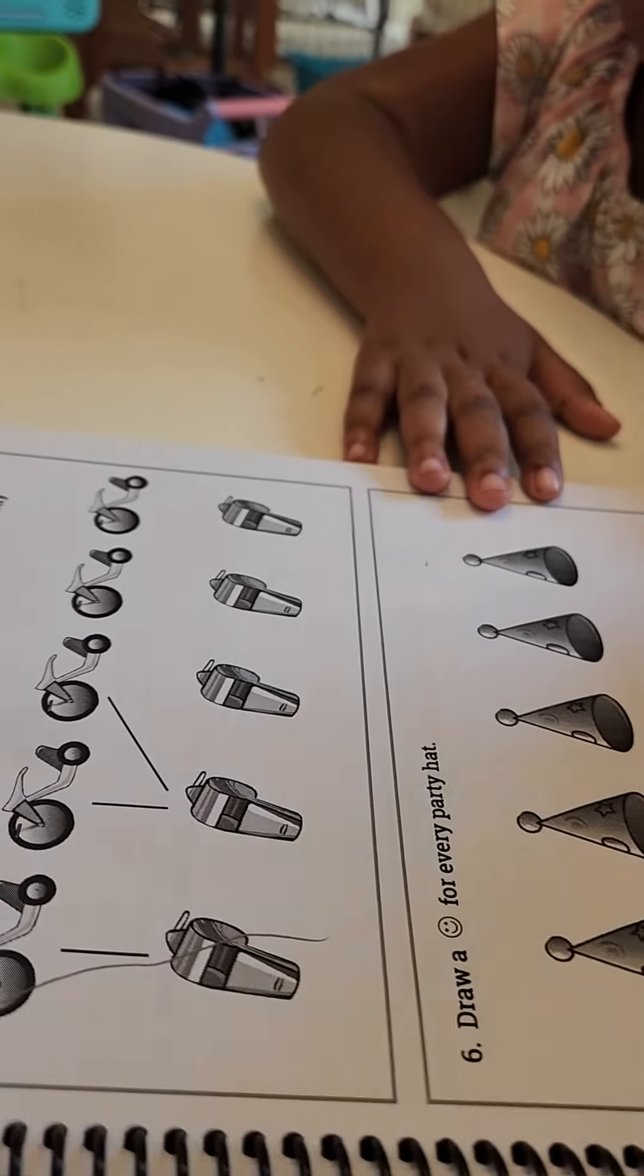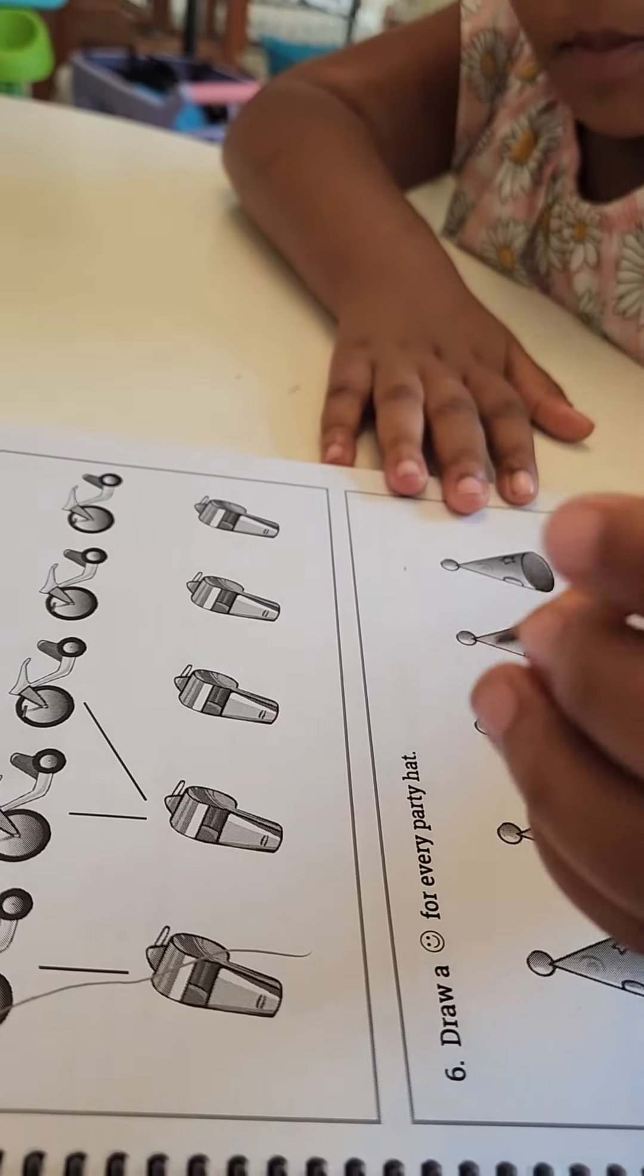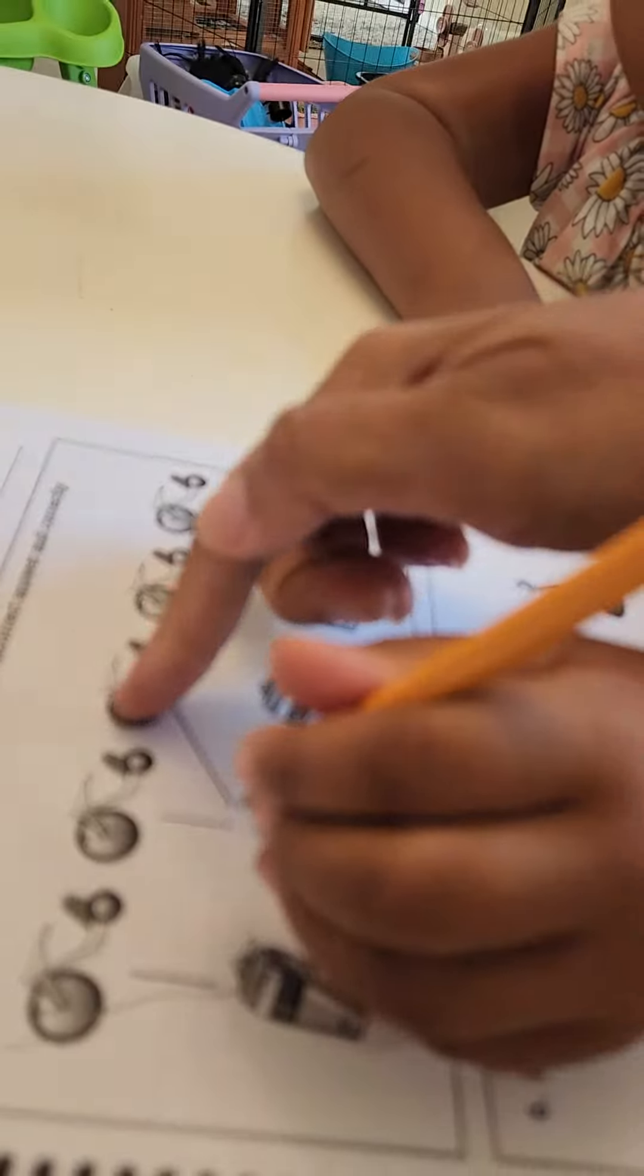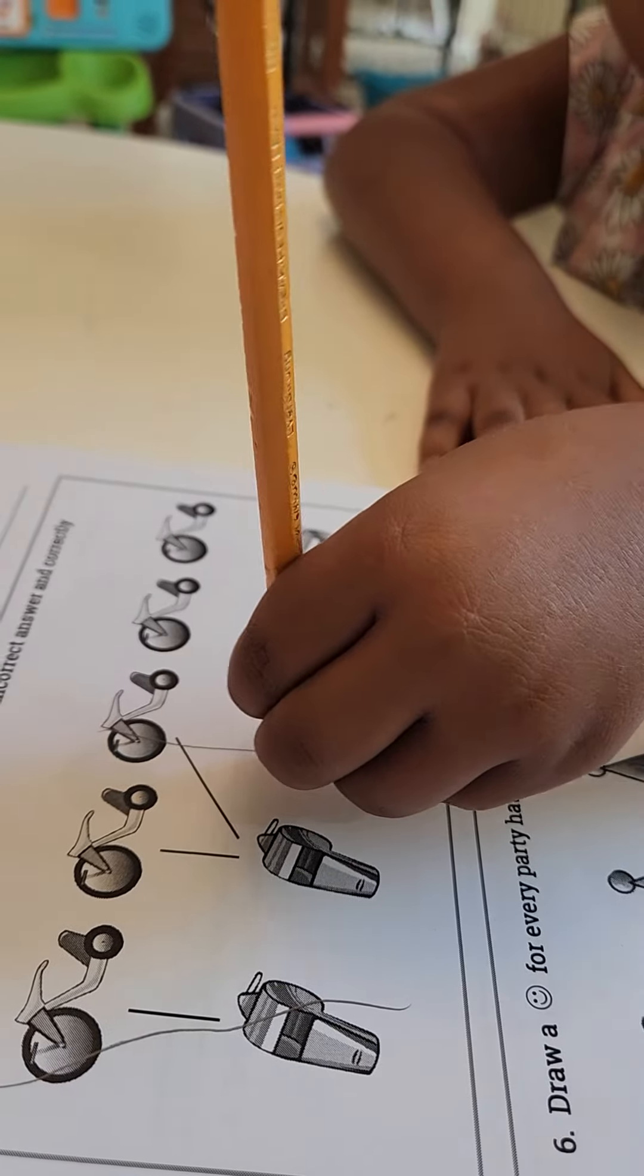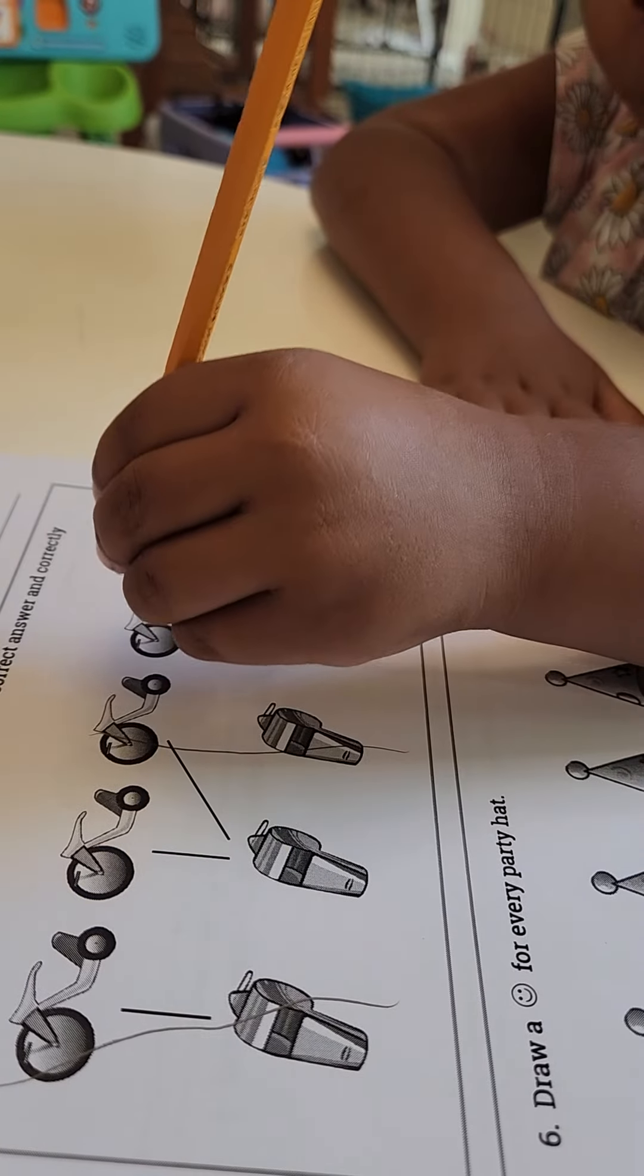Hold your pencil right. Let's match. Not, no, this way. Doesn't matter. Draw a straight line from the bikes to the whistle. Match all of them.